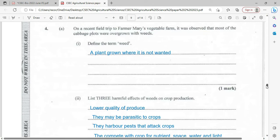List three harmful effects of weeds on crop production. It lowers the quality of produce. They may be parasitic to crops, example like the dodder weed. They are pests that attack crops. They compete with the crop for nutrients, space, water, and light.